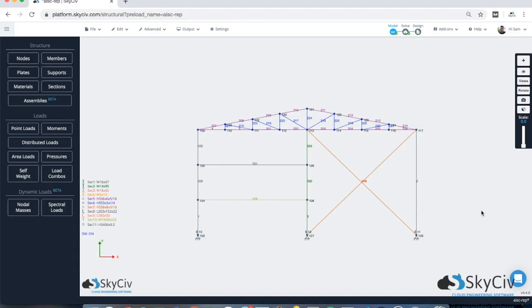Performing FEA by hand would be extremely complicated and time consuming. So we use software to solve this. Structural analysis software, such as the one shown here, SkyCiv Structural 3D, is used to simplify the FEA process through a graphical interface and UI.